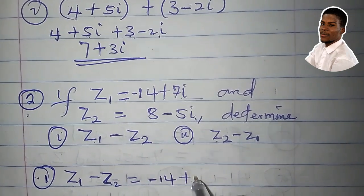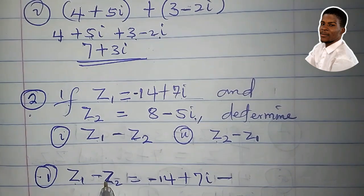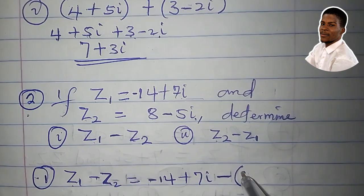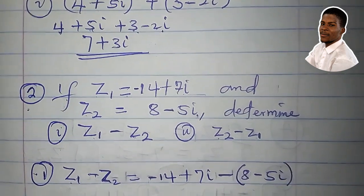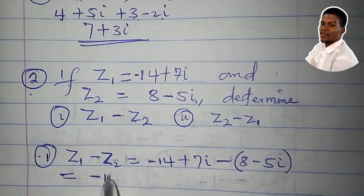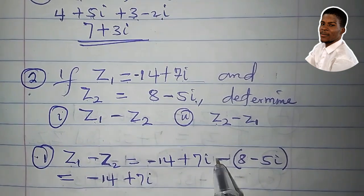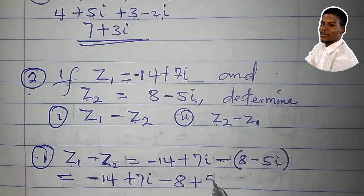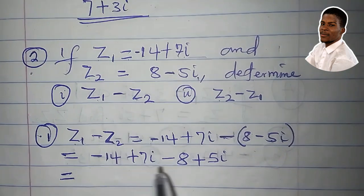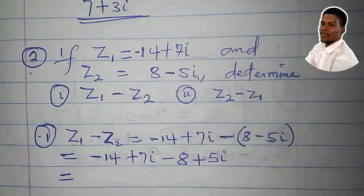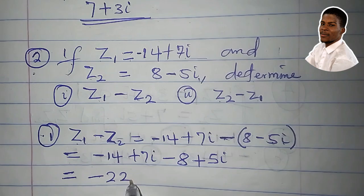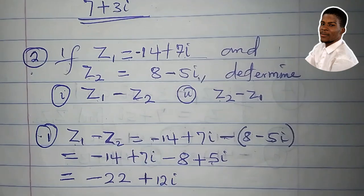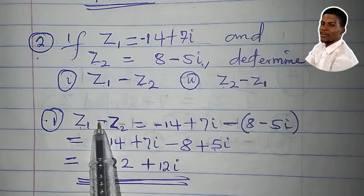z1 is this, negative 14 plus 7i, then minus z2, 8 minus 5i. We have to enclose it in brackets. So we have negative 14 plus 7i. Minus 1 times 8 is minus 8. Minus 1 times minus 5i is plus 5i. Minus 14 minus 8 is minus 22. 7i plus 5i is 12i. So this gives z1 minus z2.